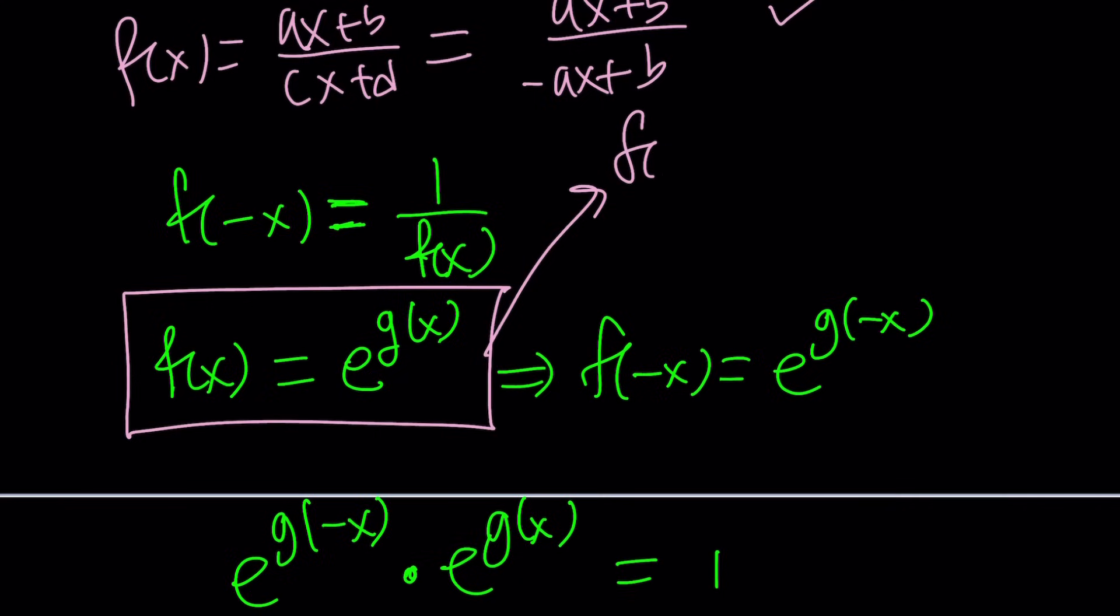This means if you pick f to be something like this, where g is an odd function, then you have a solution. In other words, f of x equals e to the x is a solution because x is an odd function, or it could be e to the x cubed. It could even be e to the power x cubed plus x. It could even be e to the power sine of x. And you can keep adding odd functions to this as long as you keep it odd, you are good to go. Isn't that awesome? I think this is amazing.